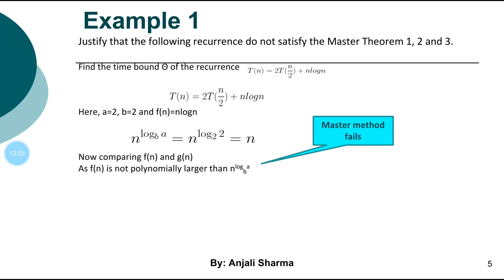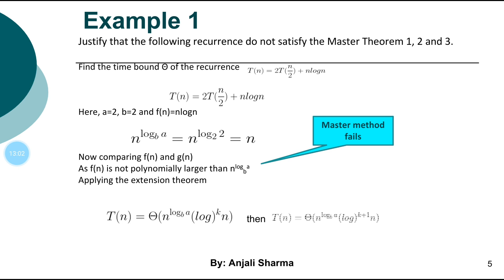We identified that the extension theorem must be applied here. For extension, we check that f(n) = g(n) multiplied by some power of log n. Here f(n) = n log n = g(n) · log n, so k = 1, which is greater than minus 1. Therefore we apply the first extension formula: the answer is g(n) with the log power increased by 1, giving n times log squared n. The time complexity is Θ(n log² n).